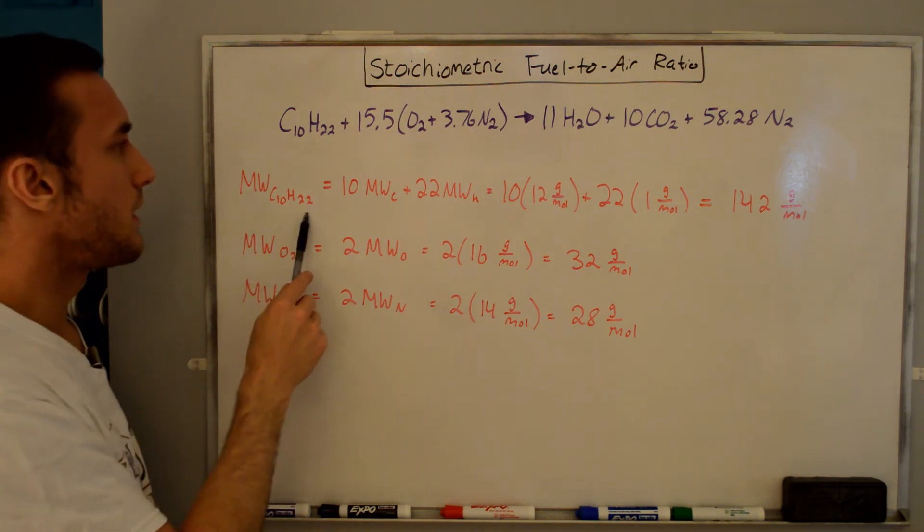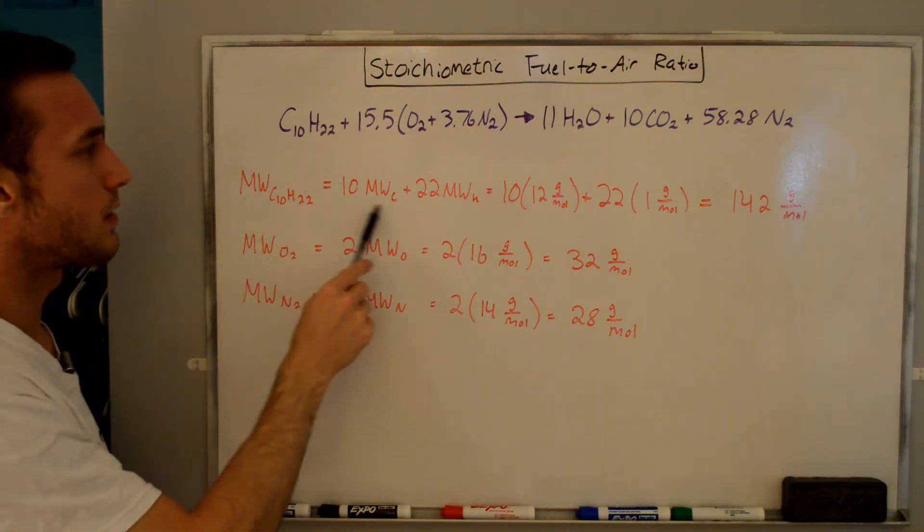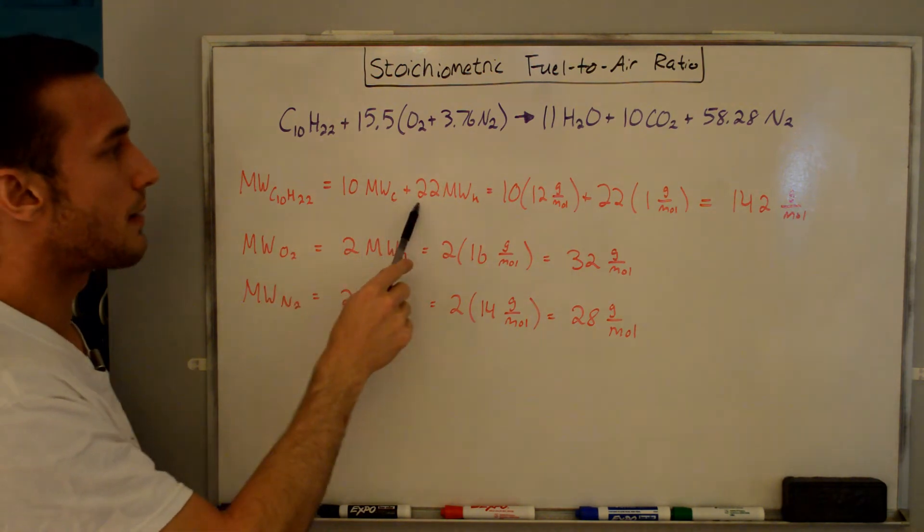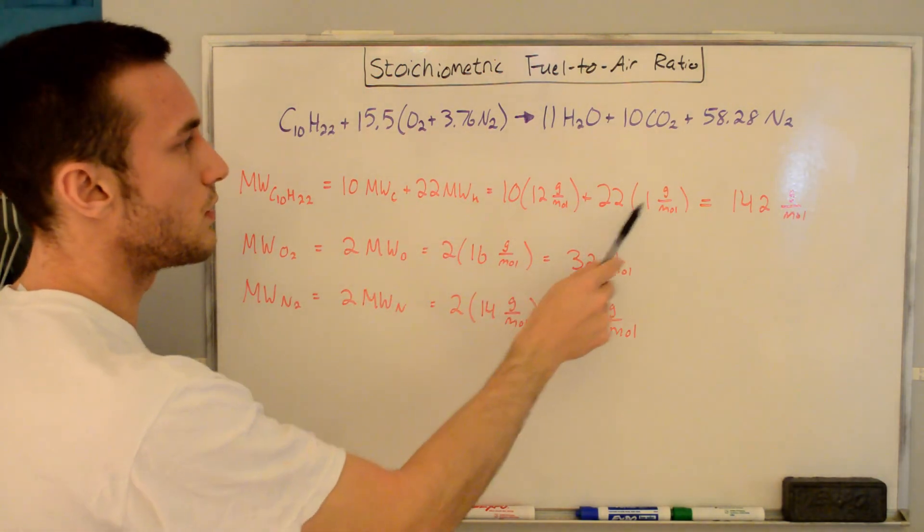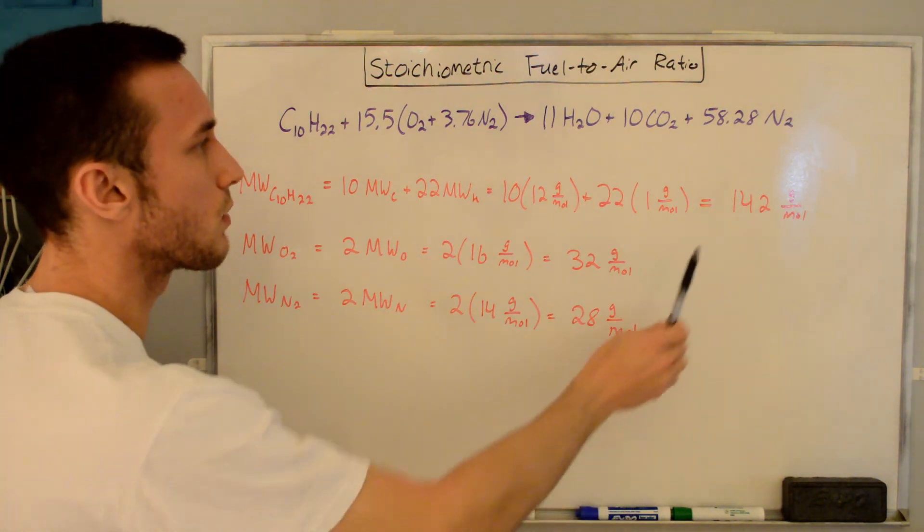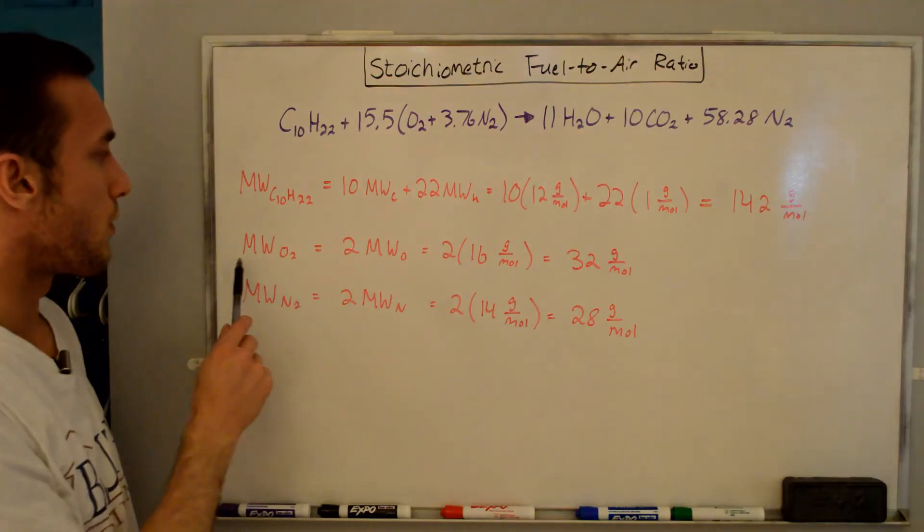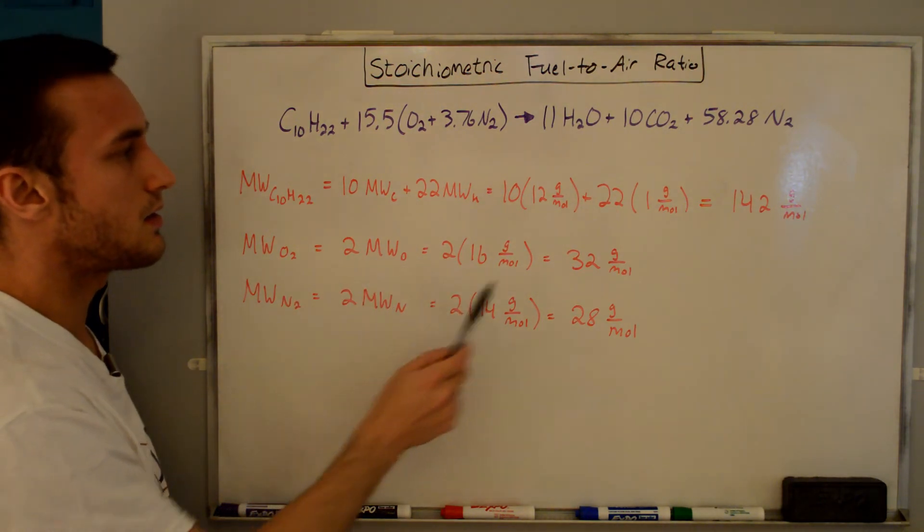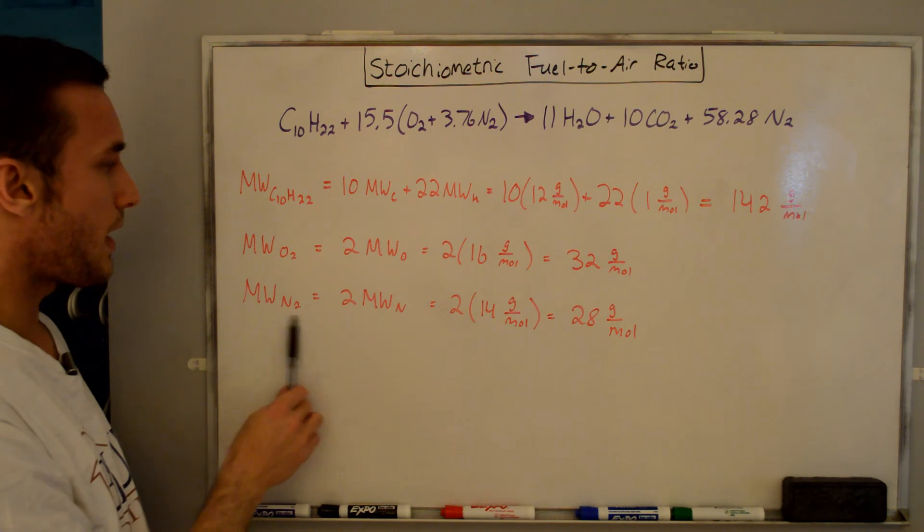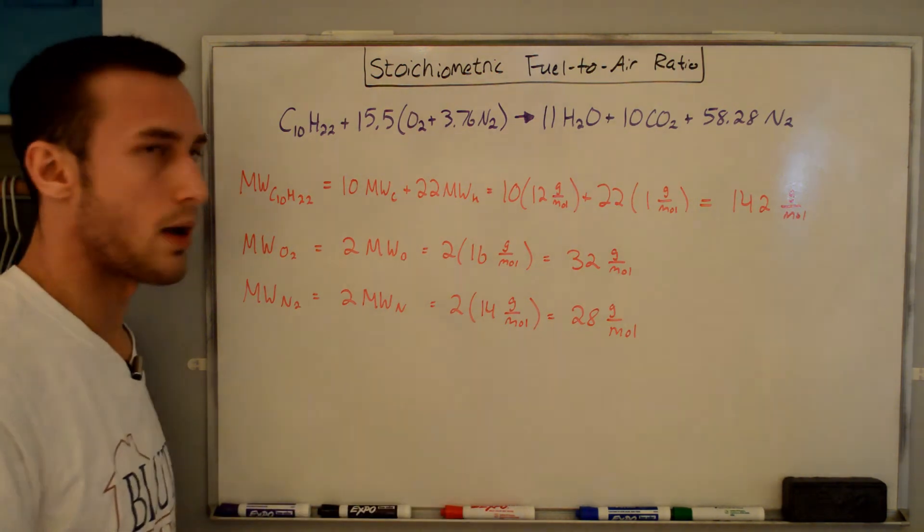And so the first one is the molecular weight of the fuel, C10H22. It's 10 times the molecular weight of carbon plus 22 times the molecular weight of hydrogen is equal to 10 times 12 grams per mole plus 22 times 1 gram per mole gives us the molecular weight of the fuel as 142 grams per mole. For the O2, we just have two times the molecular weight of oxygen, which is two times 16 is equal to 32 grams per mole. And then same for N2 gives us 28 grams per mole.